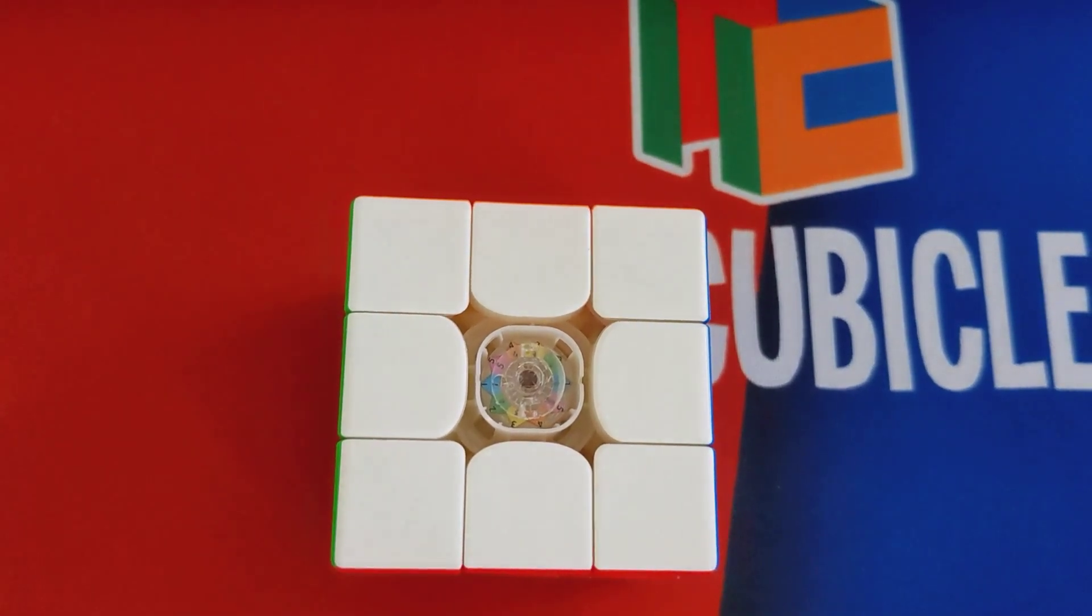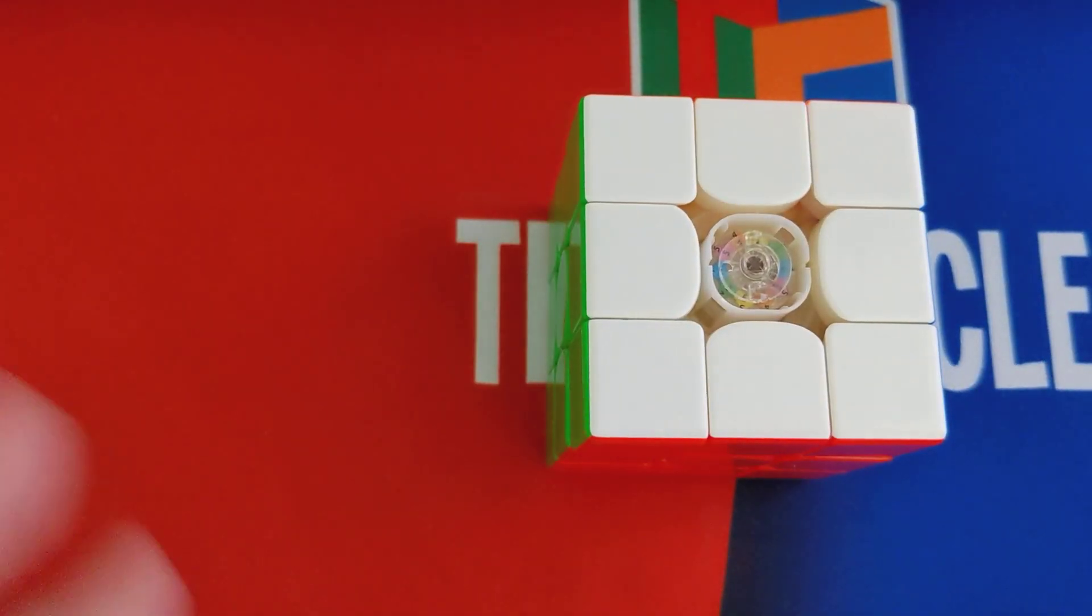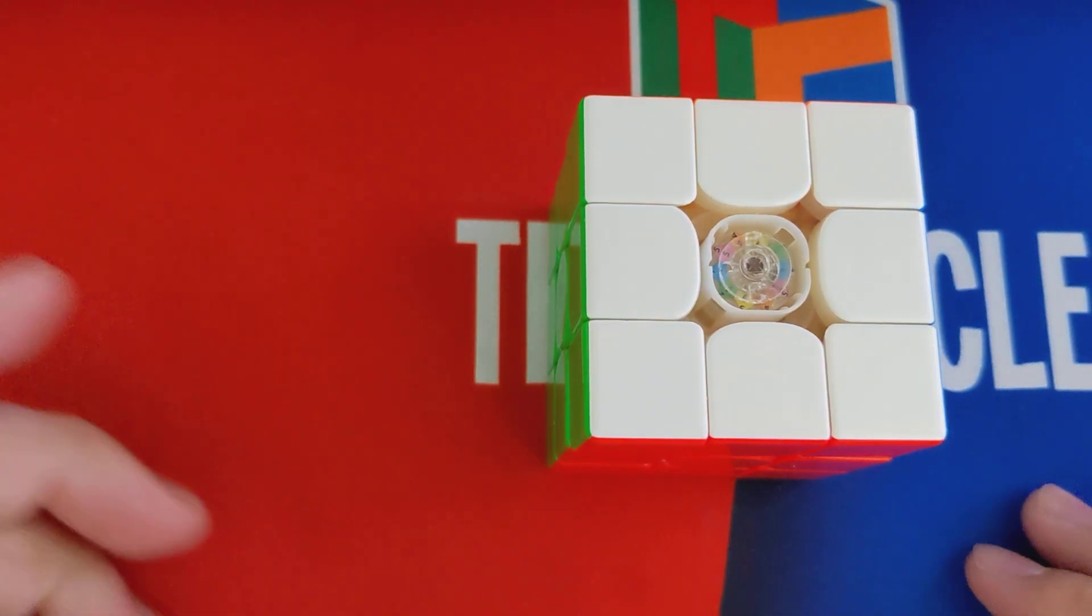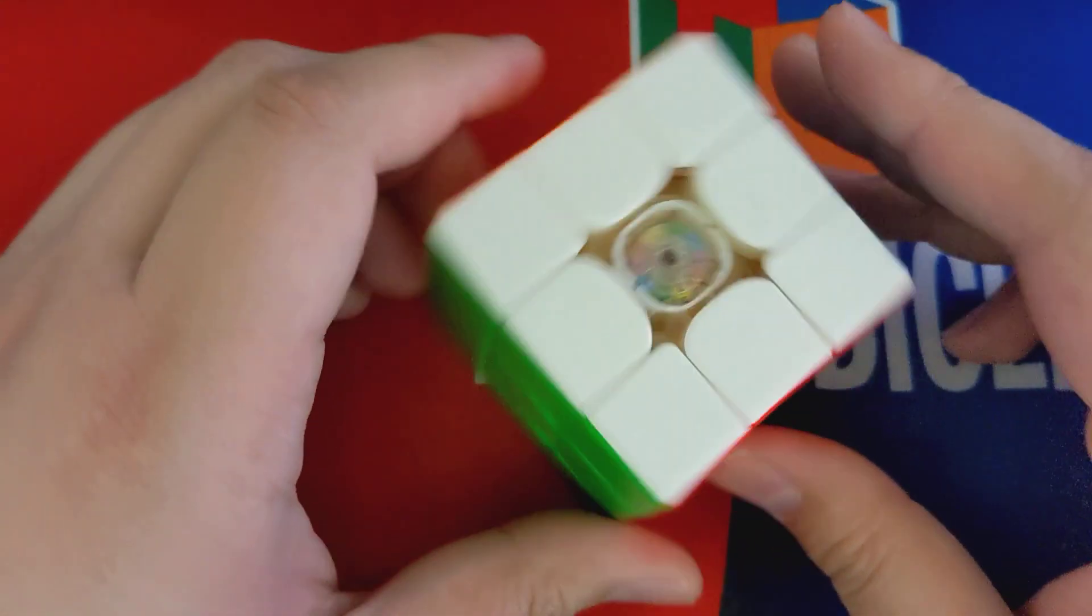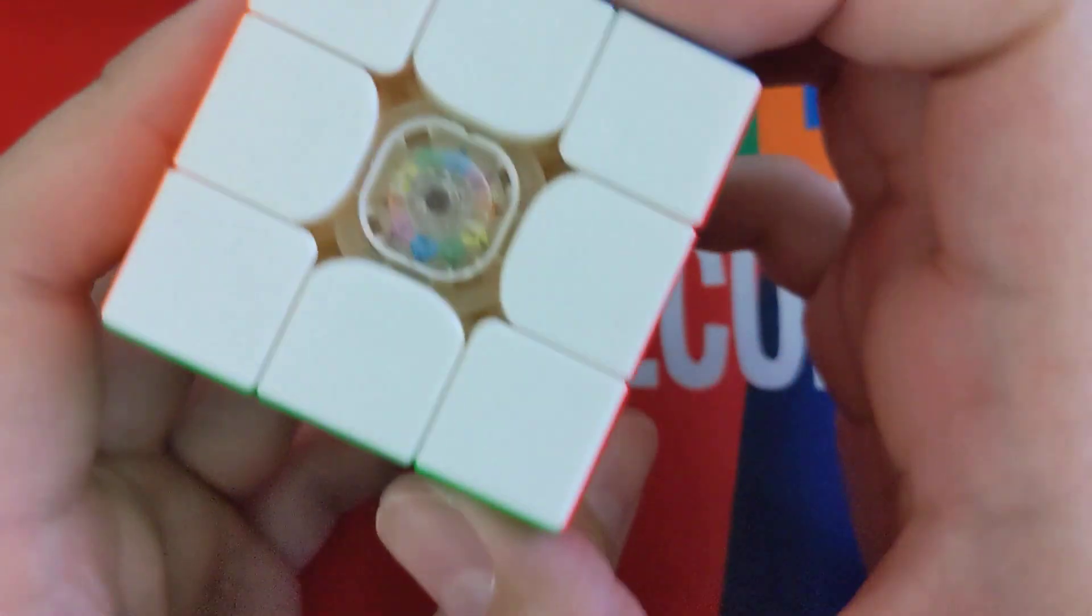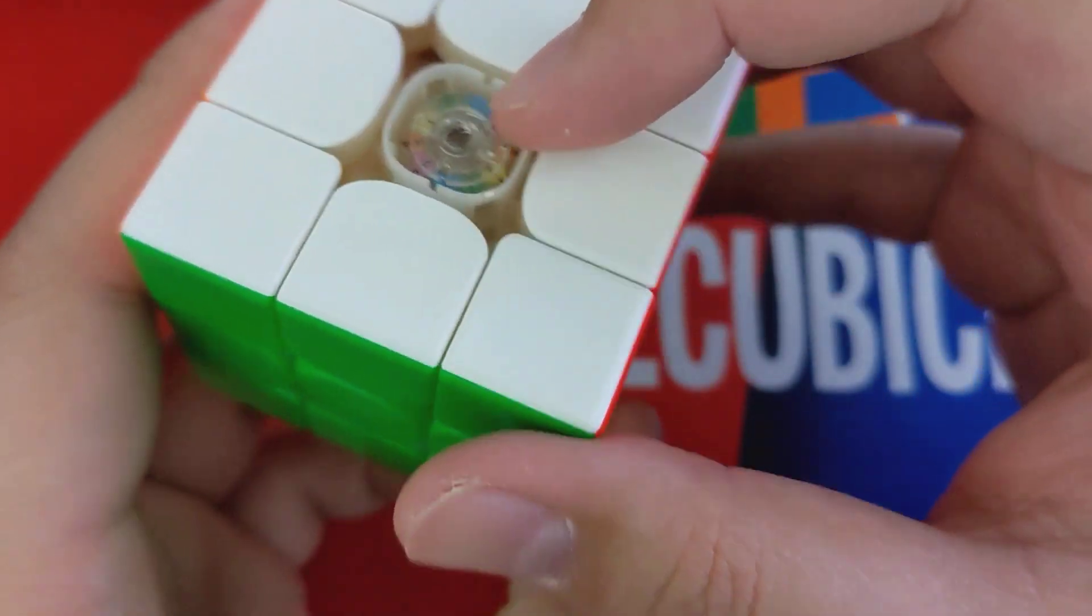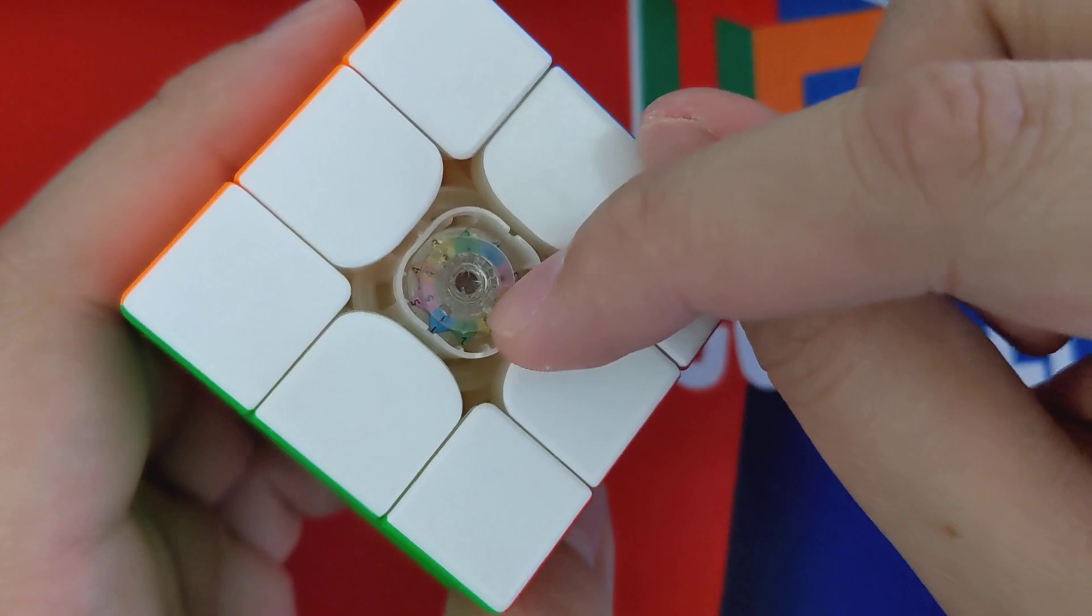Hello, this is going to be a really quick video explaining how the tensioning mechanism works on the Tornado V3. So the Tornado V3 has this tensioning mechanism where there's no screw. All your tensioning is done using this tensioning mechanism.